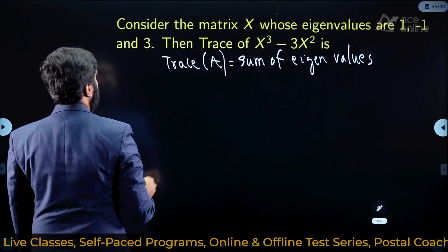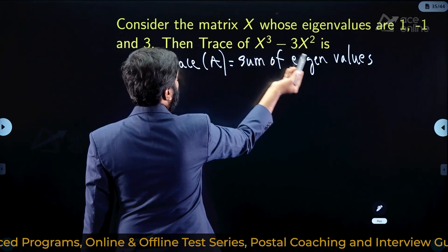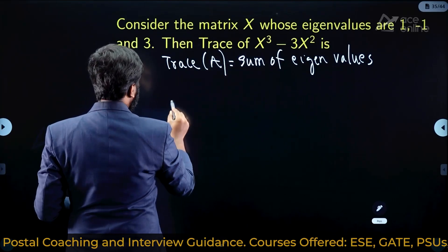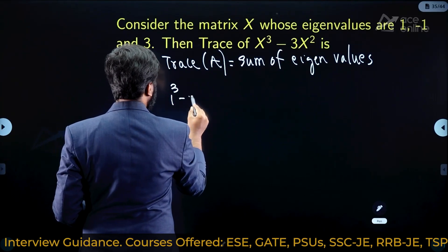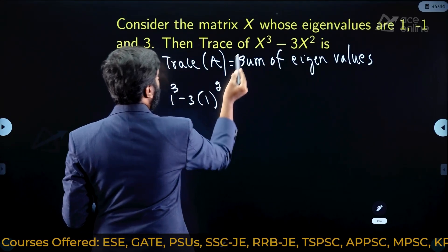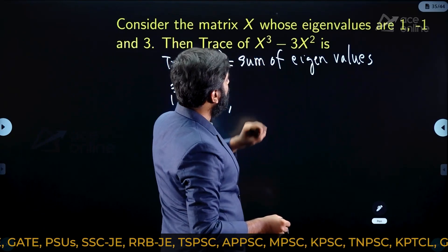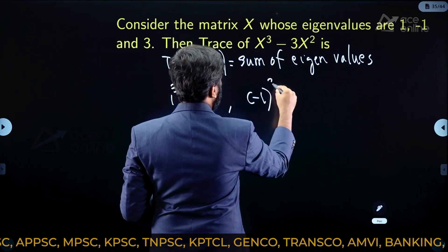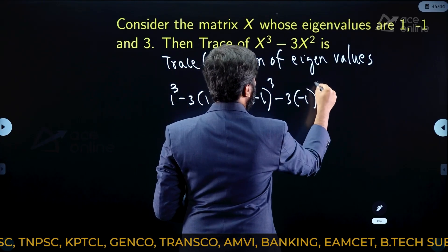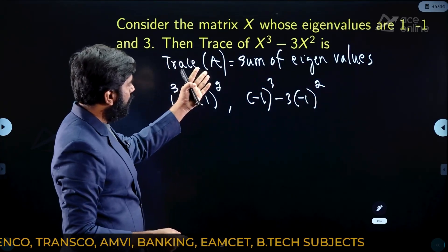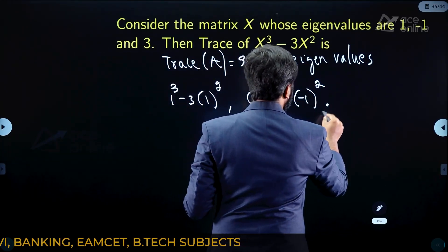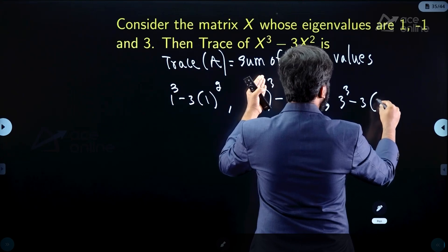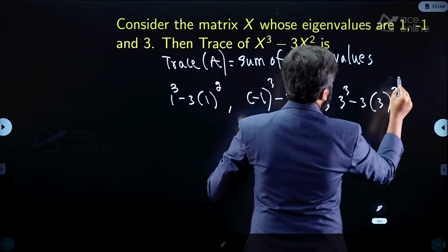Since 1, -1, 3 are eigenvalues of X, the eigenvalues of X³ - 3X² are found by substituting: for eigenvalue 1 → 1³ - 3(1²); for eigenvalue -1 → (-1)³ - 3(-1)²; for eigenvalue 3 → 3³ - 3(3²).